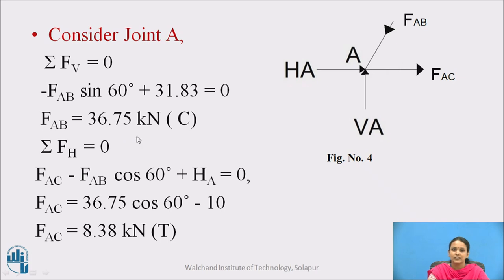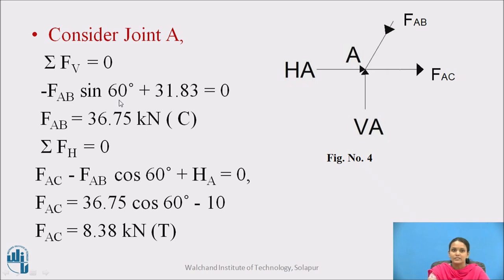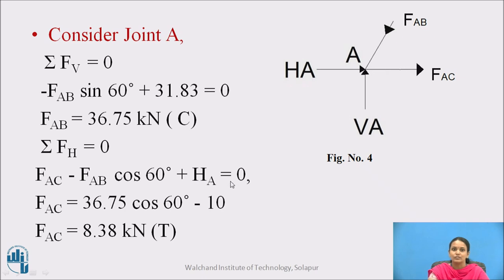After calculating the reactions, at joint A there are only two unknowns since the horizontal and vertical reactions are already calculated. Using the two equilibrium equations, forces in member AC and member AB can be found. Considering force AB as compression, the vertical equilibrium gives minus FAB sin 60 plus 31.83 equals zero, so force in member AB equals 36.75 kN compression. From horizontal equilibrium, force in member AC equals 8.38 kN tension.